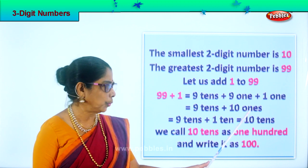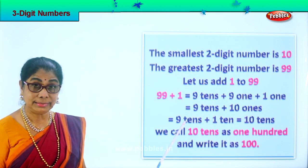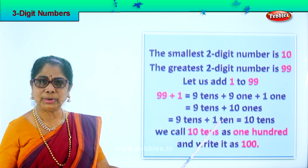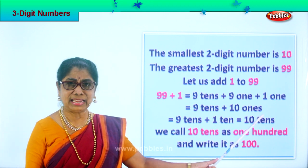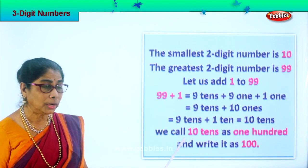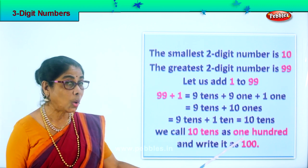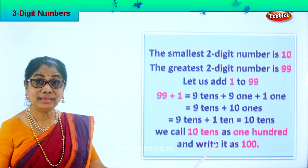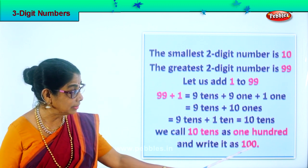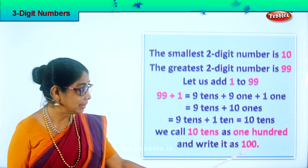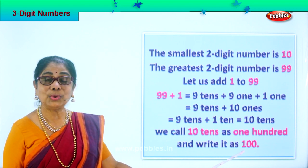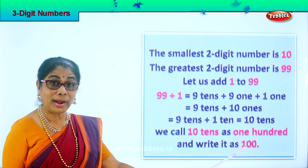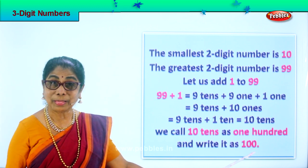Can you put ten ones? No. So nine tens plus one more ten — what is nine tens and one more ten? Ten tens. So we have ten tens. We call ten tens as one hundred. So one hundred is a three digit number because it has one and two zeros.